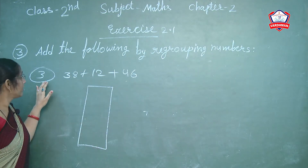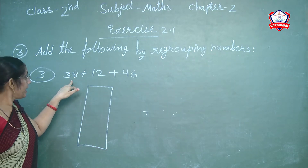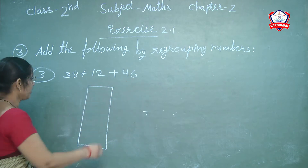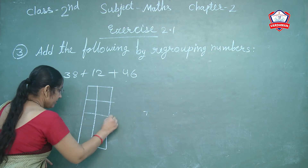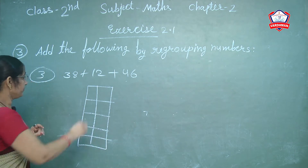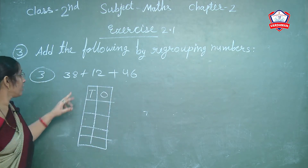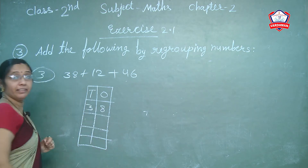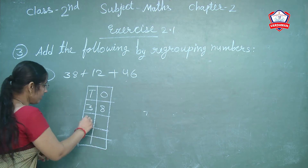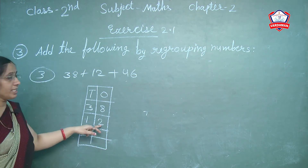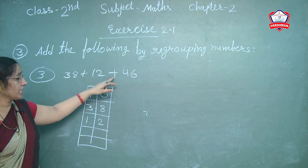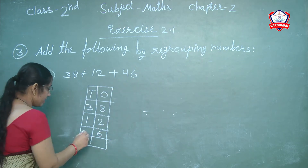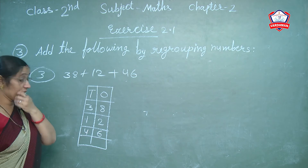43 plus 7 is equal to 50. Next, question number 3: 38 plus 12 plus 46. Write in columns — tens and ones. First is 38: write 38. Next is 12: write 12 — 2 is ones and 1 is tens. Next 46: 6 is ones and 4 is tens.